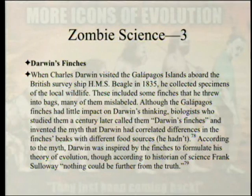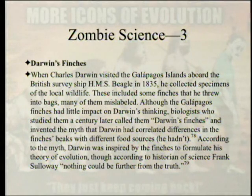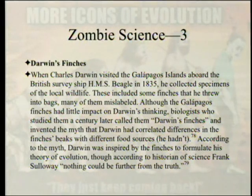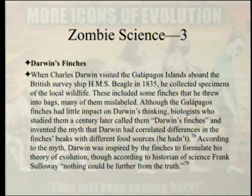Now we're in part 2 of chapter 3 discussing Darwin's finches. When Charles Darwin visited the Galapagos Islands aboard the HMS Beagle in 1835, he collected specimens including some finches he threw into bags, many of them mislabeled. Although the Galapagos finches had little impact on Darwin's thinking, biologists who studied them a century later called them Darwin's finches and invented the myth that Darwin had correlated differences in finches' beaks with different food sources — he hadn't. According to historian of science Frank Sulloway, nothing could be further from the truth.